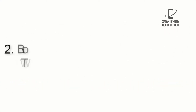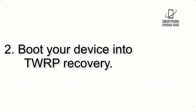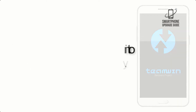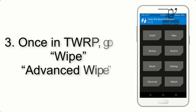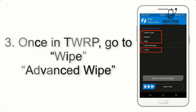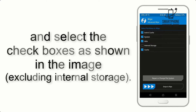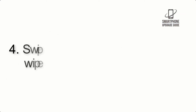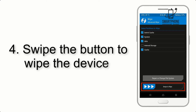Step 2: Boot your device into TWRP recovery. Once in TWRP, click on Advanced Wipe and select the checkboxes as shown in the image, excluding internal storage.